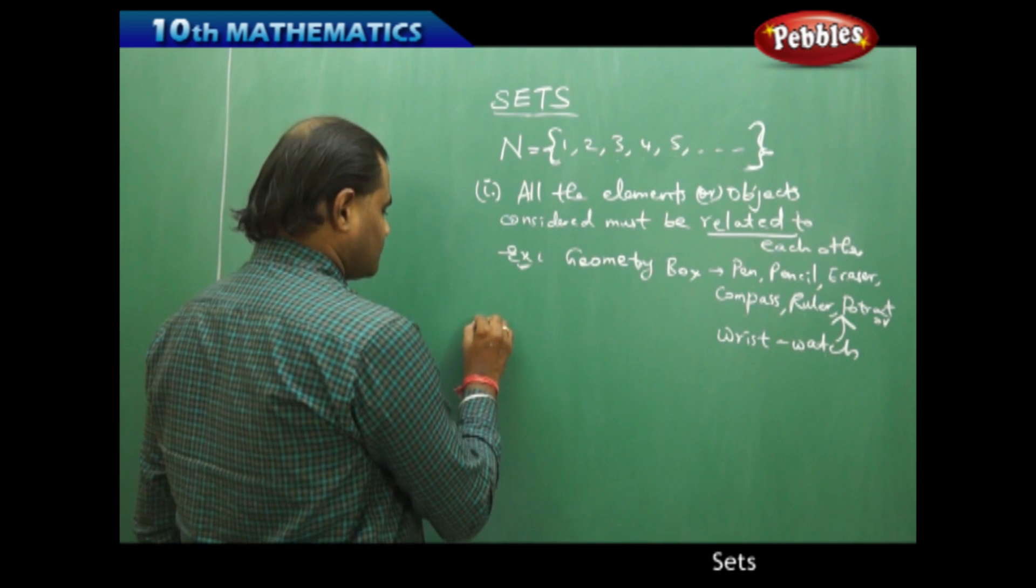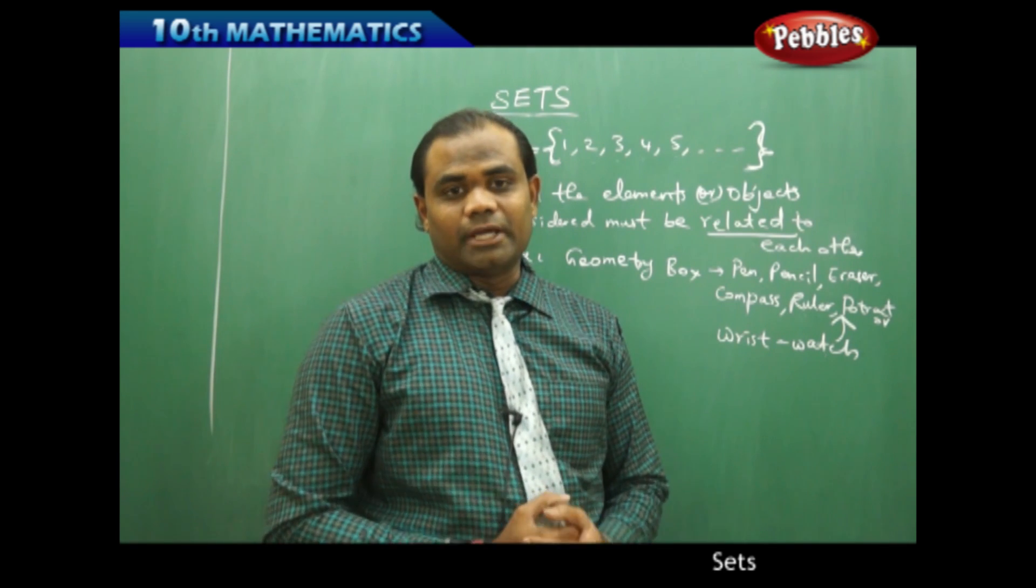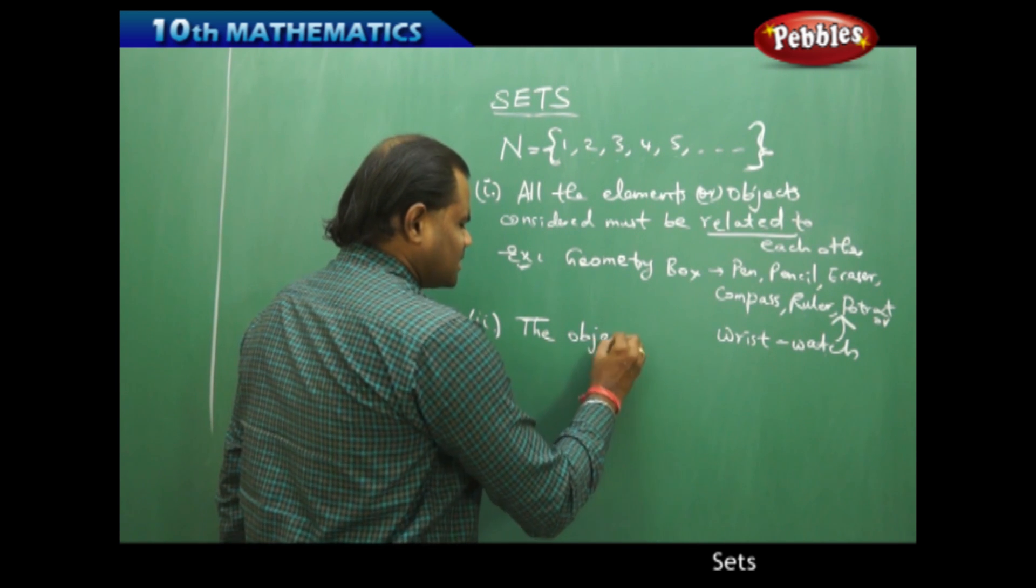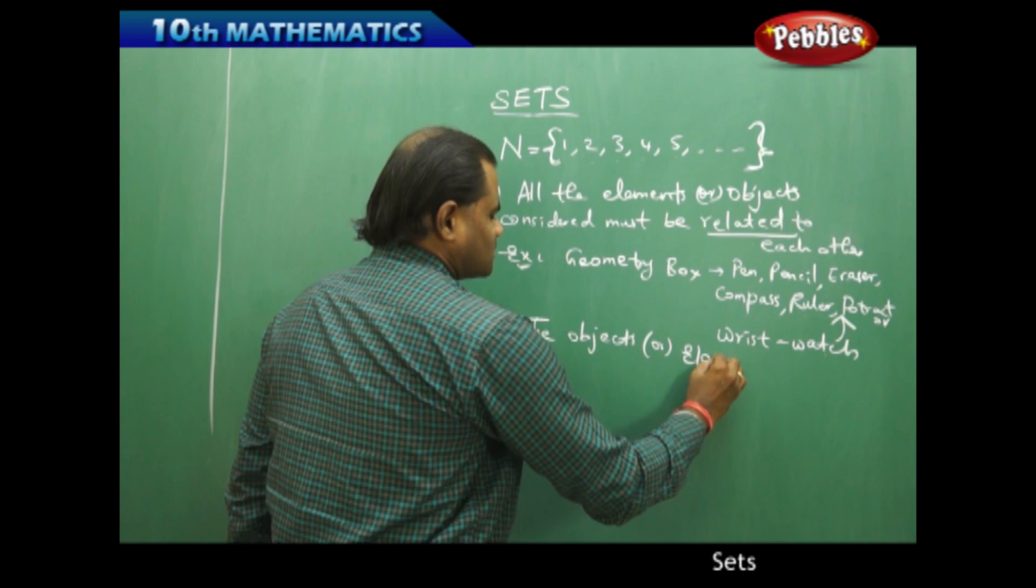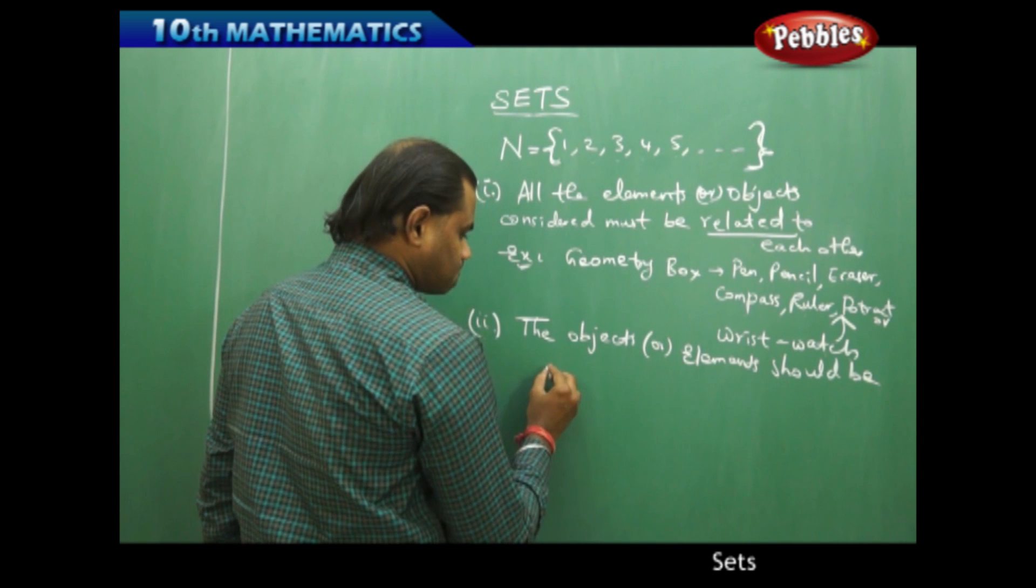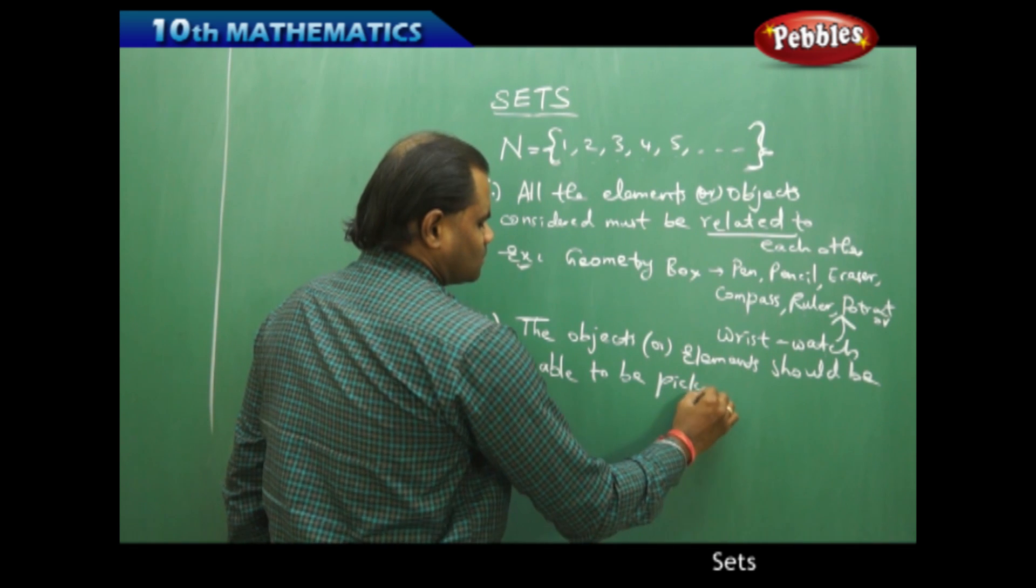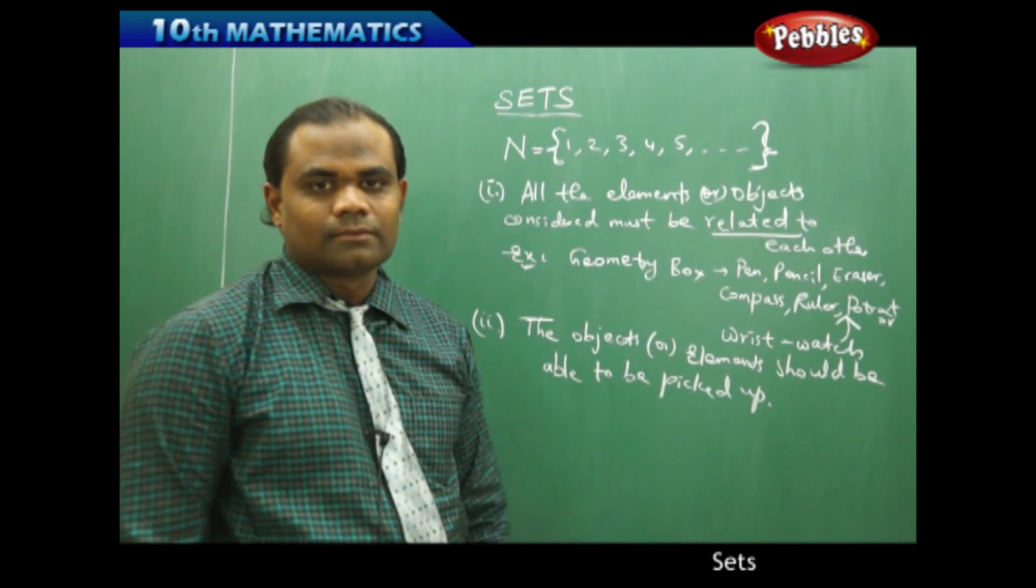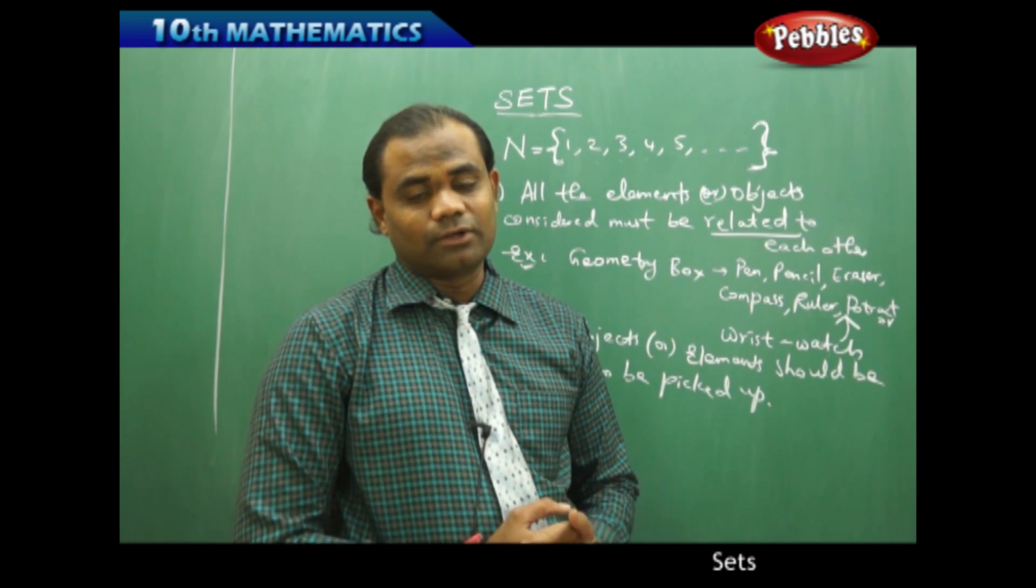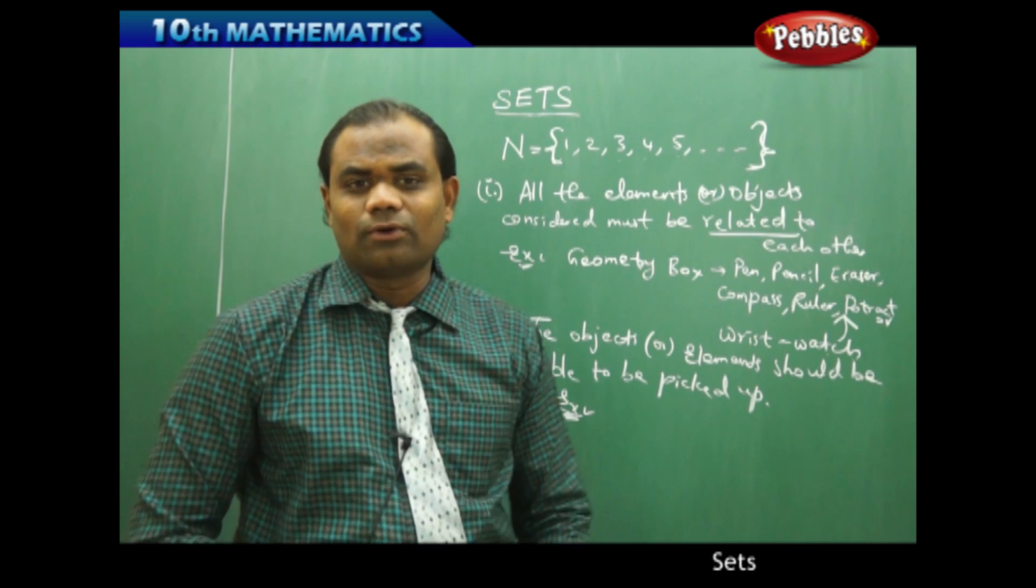Secondly, when I pick the objects I should be able to pick the objects inside the set. The objects or elements inside the set should be able to be picked up. So when I say the objects or elements should be able to be picked up, then this forms a very complex situation.